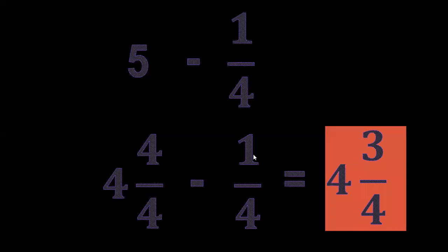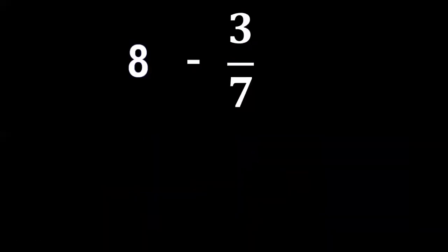Another one: eight minus three-sevenths. Rename it again. Since the denominator of the subtraction is seven, borrow one from eight — it becomes seven — then divide into seven equal parts.